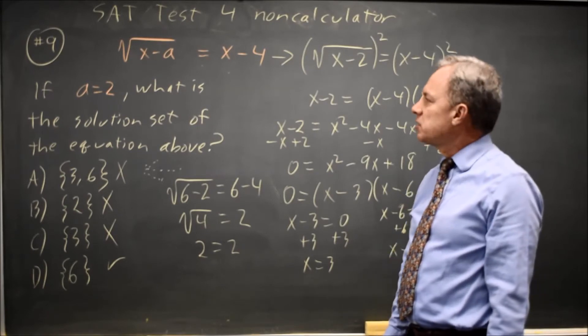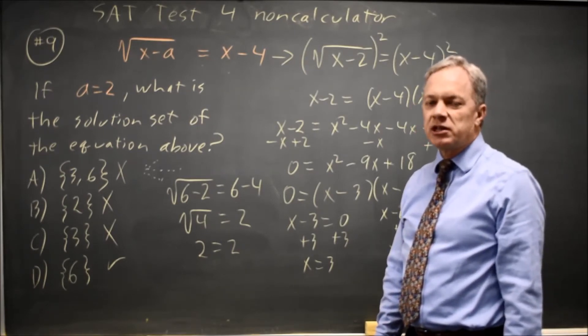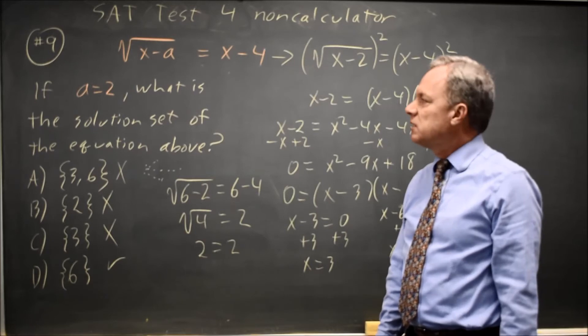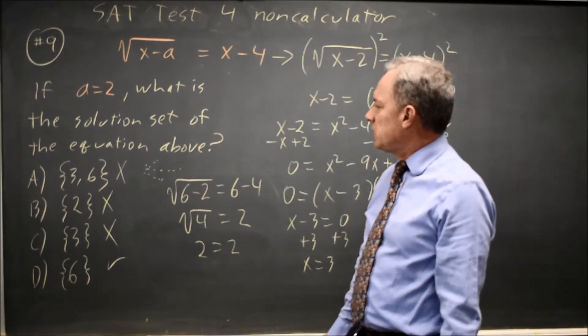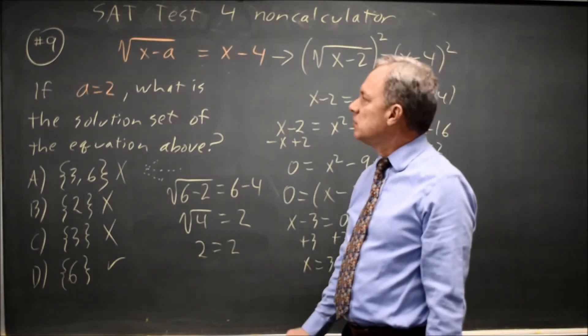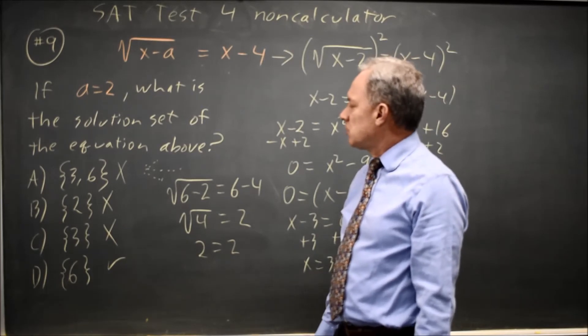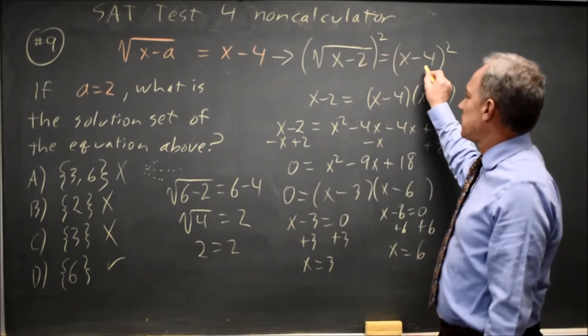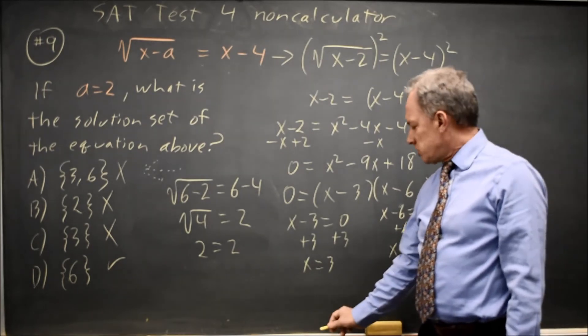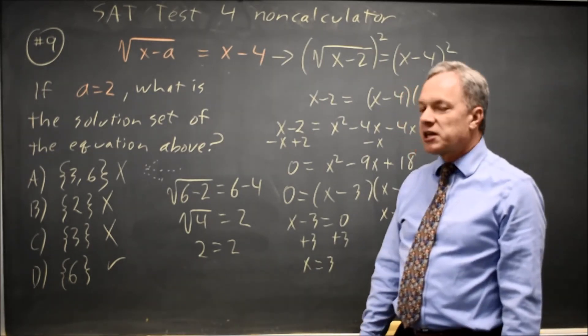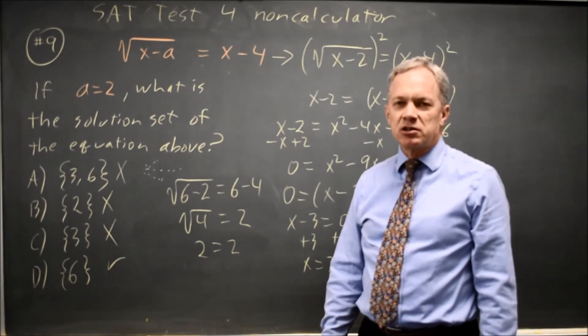In rational equations and radical equations, you can get solutions algebraically that end up not working, either because we're dividing by 0, or in this case, because we've flipped a sign when we squared both sides.